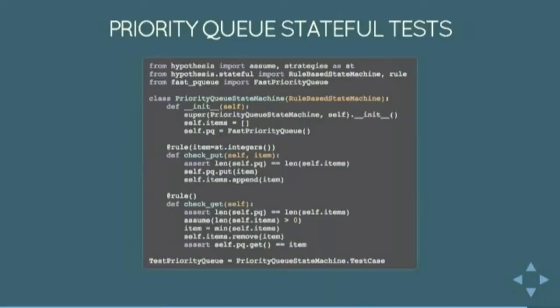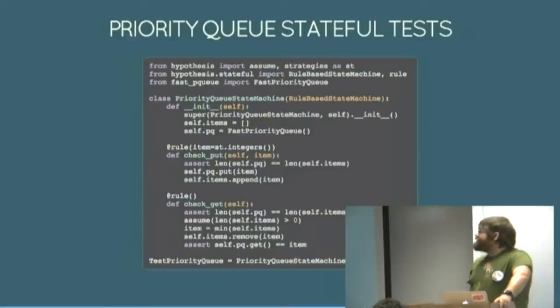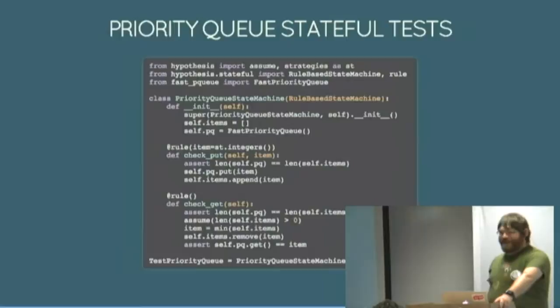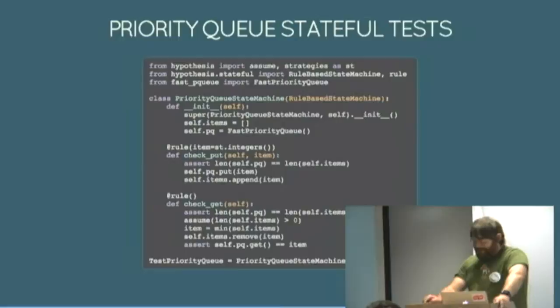Fortunately Hypothesis gives you tools to do that. One possible way to do it is your strategy generates a list of operations like put one, get, put two, put seven, get, get, get, oops it's an empty queue, explode. And run that by hand. Hypothesis has a state machine based system that makes it easier to do that kind of thing. It handles a lot of the machinery for you.